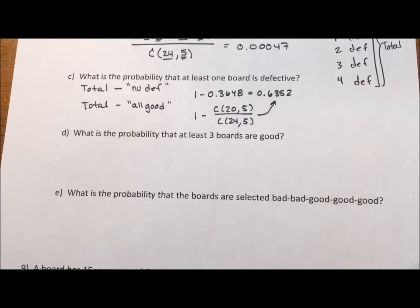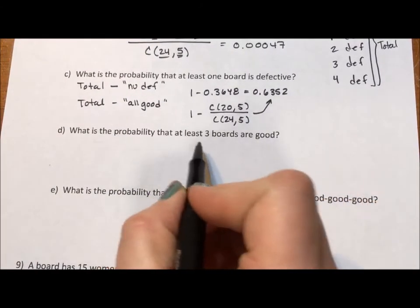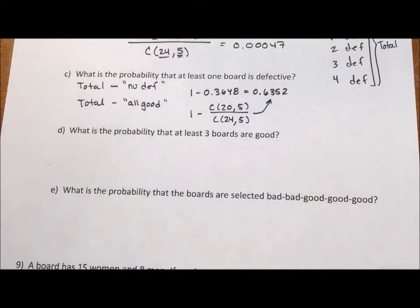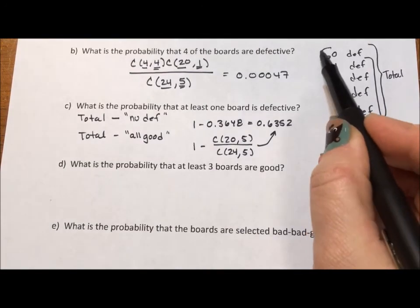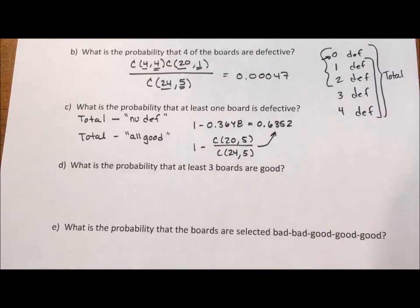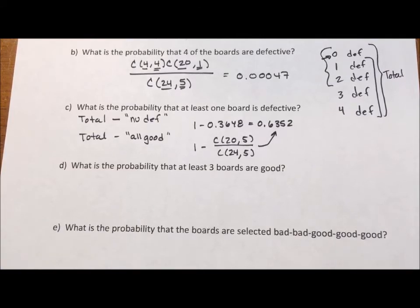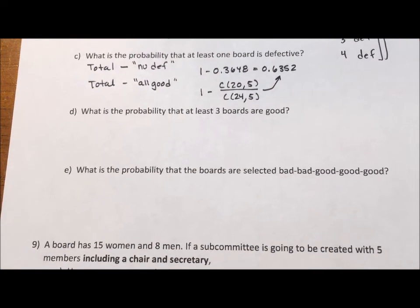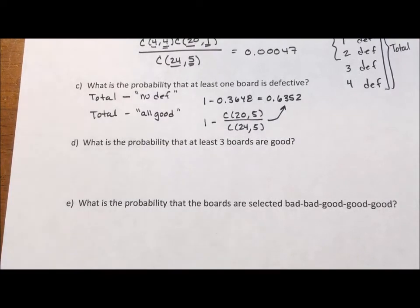So if I want to know the probability that 3 boards are good, at least 3 boards are good, that means what we're really doing is 0 defective, 1 defective or 2 defective. If at least 3 are good, that means it's 3, 4, or 5. Now, I could do addition or subtraction. I'm going to do addition because it's such a minor difference in calculation. And I think subtraction sometimes kind of gets weird.